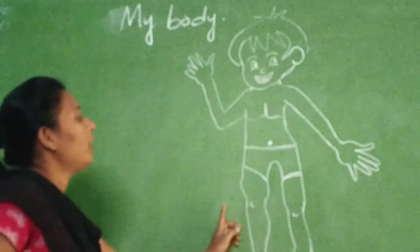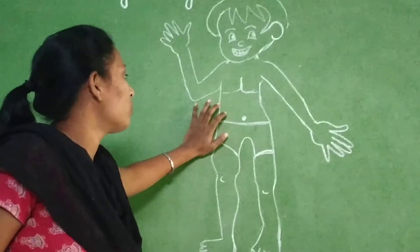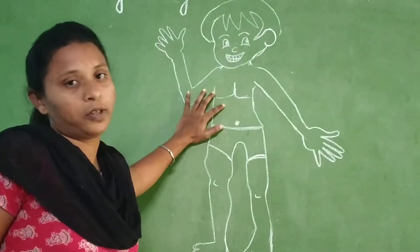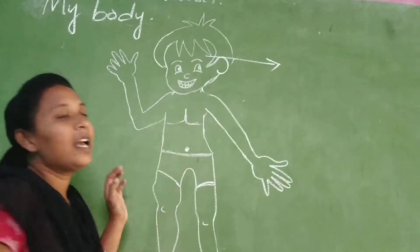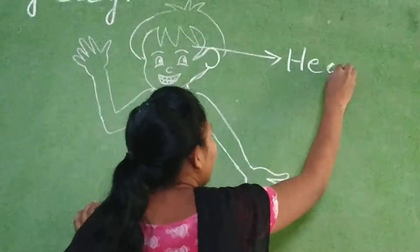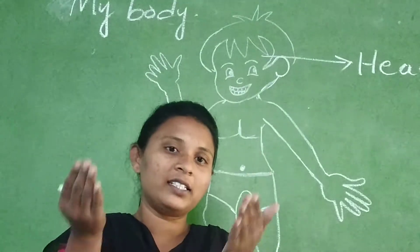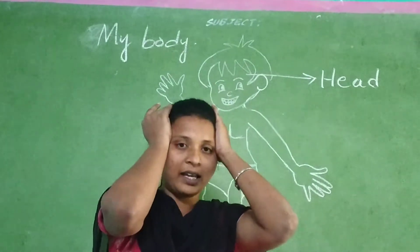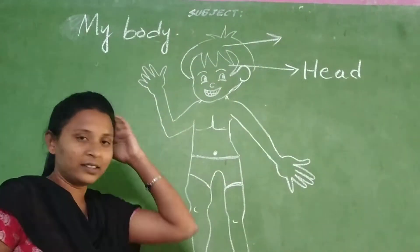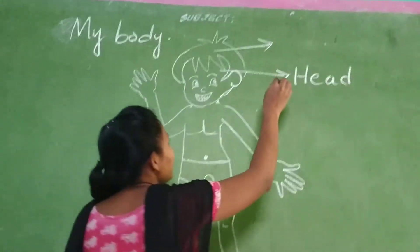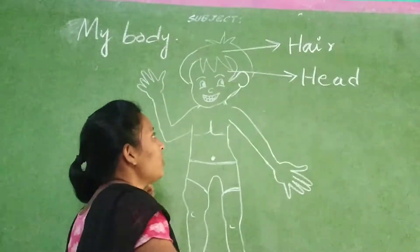Now see here and observe — this board is going to tell you about his body parts. First, see here. What is this? This is head. Touch your head. This is my head. Touch your head, children.